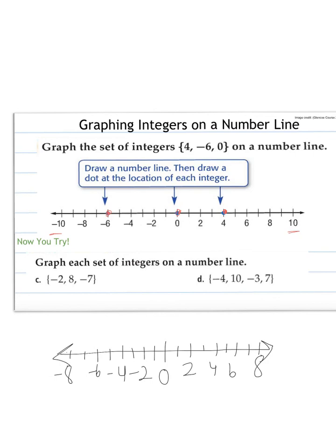Now we are going to plot these points. So negative 2 is right here. 8, we're at the positive, so we're at the right side of 0. And negative 7 is to the left, so we count between negative 6 and negative 7. Notice that to the left is negative and to the right is our positive numbers.